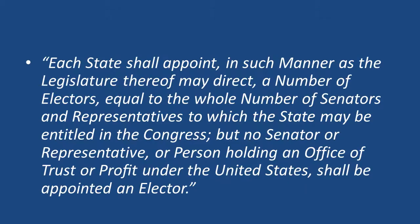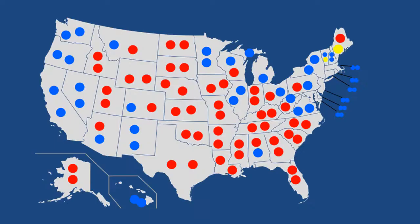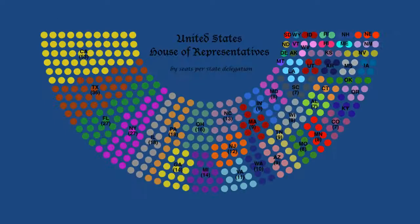Article 2, Section 1 says that each state shall appoint, in such manner as the legislature thereof may direct, a number of electors equal to the whole number of senators and representatives to which the state may be entitled in the Congress, but no senator, or representative, or person holding an office of trust or profit under the United States shall be appointed an elector. Each state will receive two electoral votes for the two senators they have, and this gives the smaller and least populated states equal representation with the much larger and more populated states. The rest of the votes are determined by the number of representatives a state has.